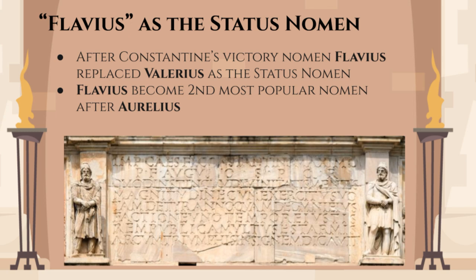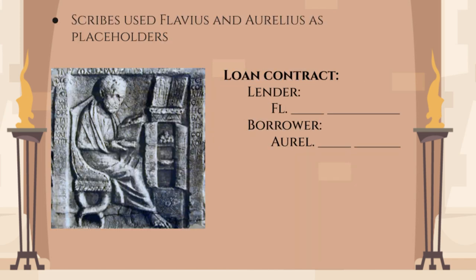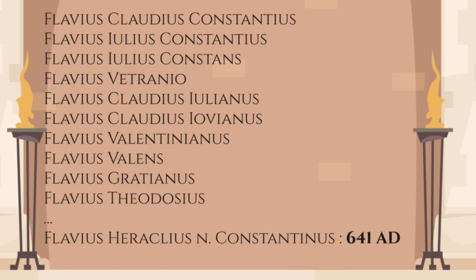In the Christian epigraphy of Rome and Carthage, the ratio between Aurelius and Flavius is 11 to 4, but all of the Flavii were of high status, while the Aurelii were mostly commoners. The names became so synonymous with status that scribes started to draft up loan contracts with the names for lender and borrower already filled in as Flavius and Aurelius. The emperors of the rest of the 4th, 5th and 6th centuries were almost all men of the new aristocracy, who owed their status not to the old senatorial rank but to service in the new imperial system. That is why almost all of them have the nomen Flavius.